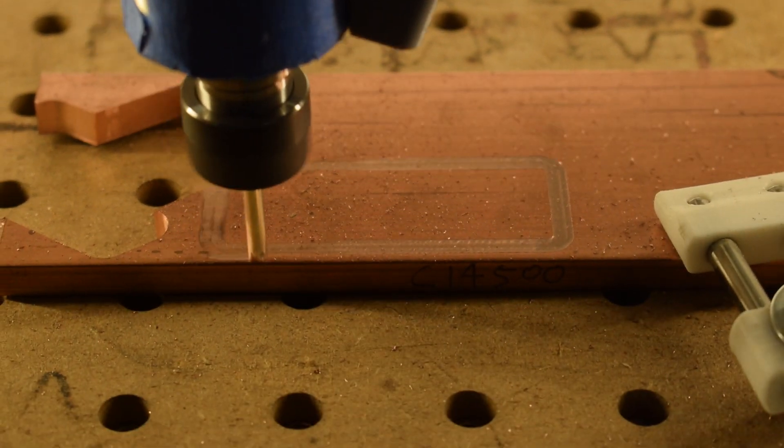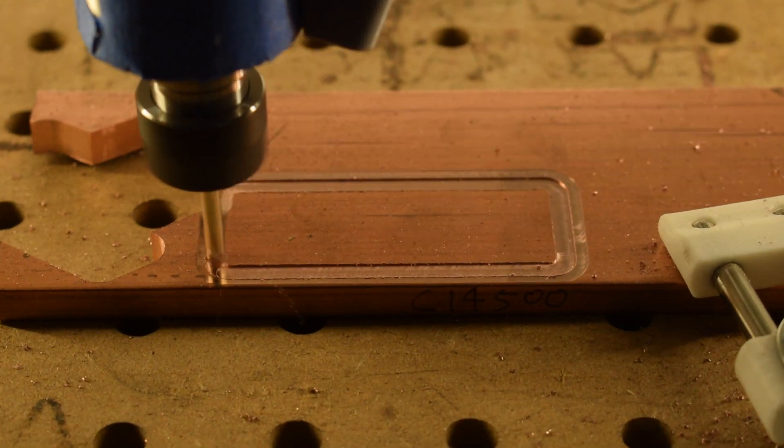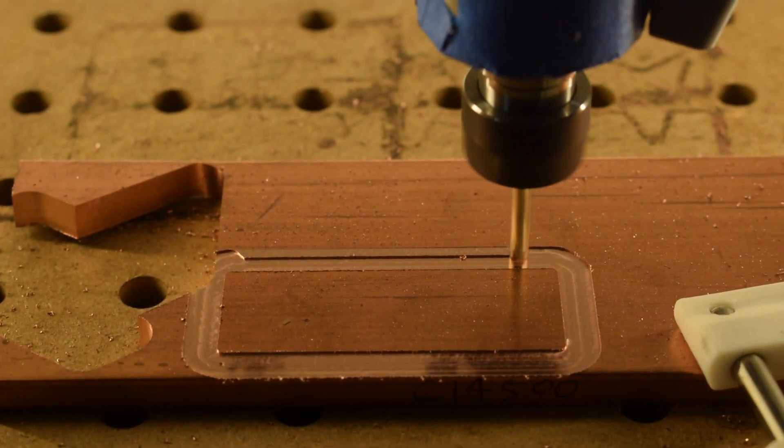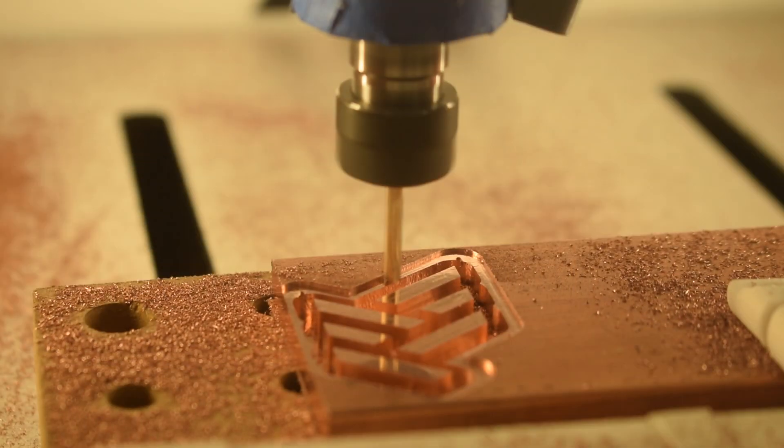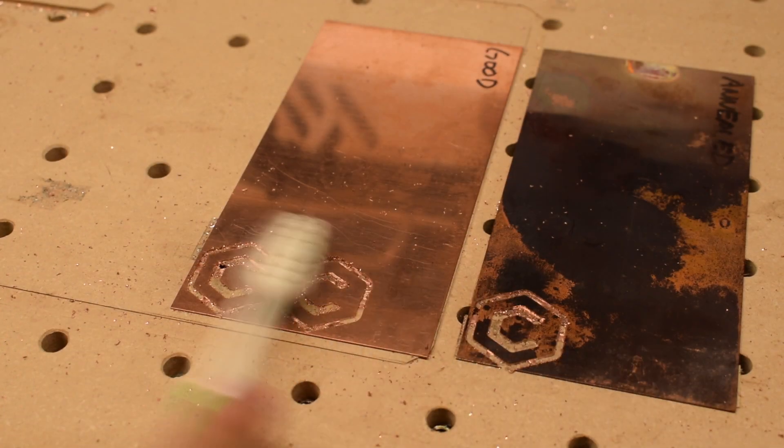This is what C145 tellurium copper in an H04 hardened temper looks like being machined. Clean chips, just like in good aluminum or brass. This alloy is designed to be easy to machine, and comparing this stuff to the mystery copper, the difference is night and day.